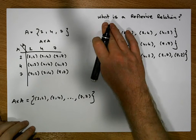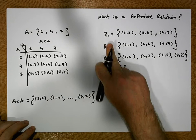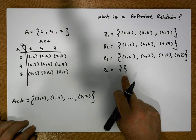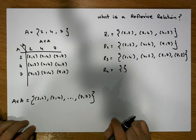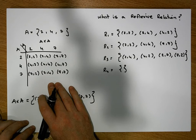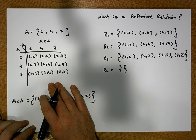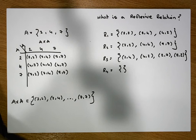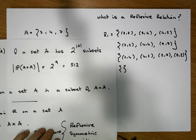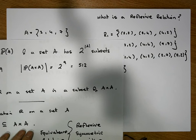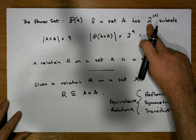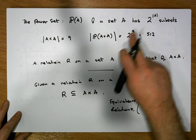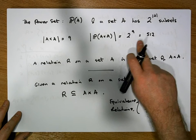So the question we have is: what is a reflexive relation? We know each of these sets is a relation by definition. There are nine elements in this cross product, so the total number of relations we could create is two to the power of nine, which is 512.